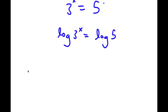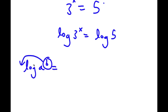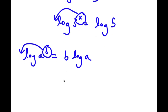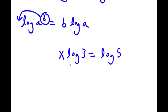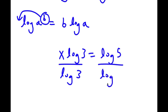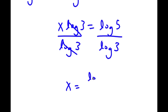Using the logarithm property that log a to the power of b equals b times log a, I can move x to the front: x times log 3 equals log 5. Dividing both sides by log 3, these cancel and I'm left with x equals log 5 over log 3.